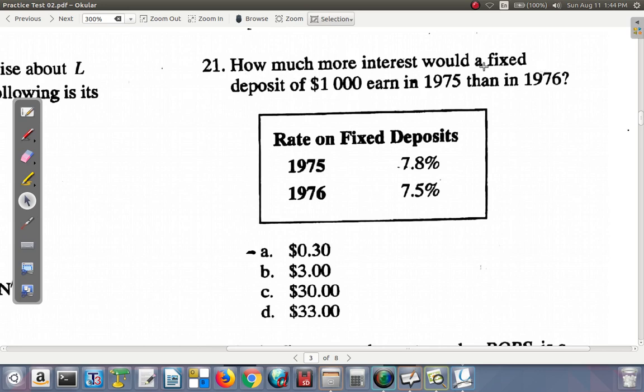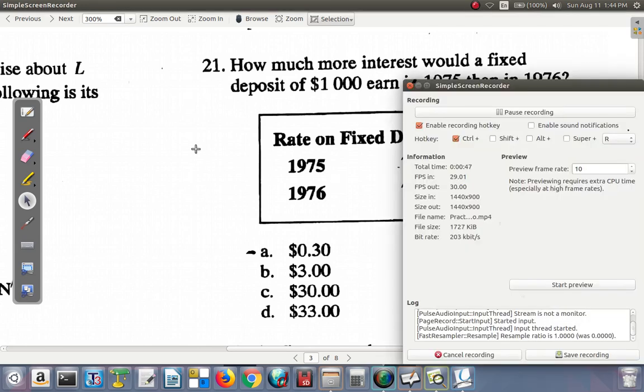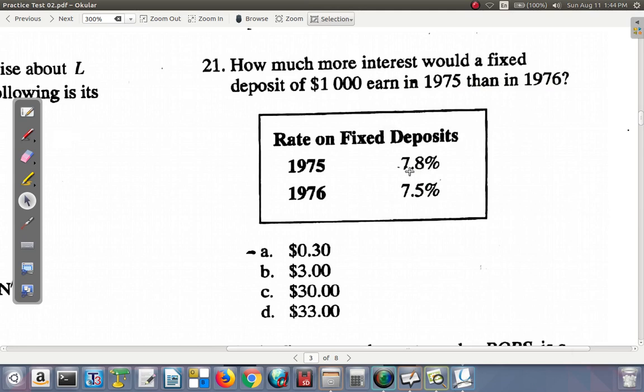It says, how much more interest would a fixed deposit of $1,000 earn in 1975 than in 1976? You're going to have to find 7.8% that applies in 1975 and then 7.5% as applied in 1976. So let's see what's happening.